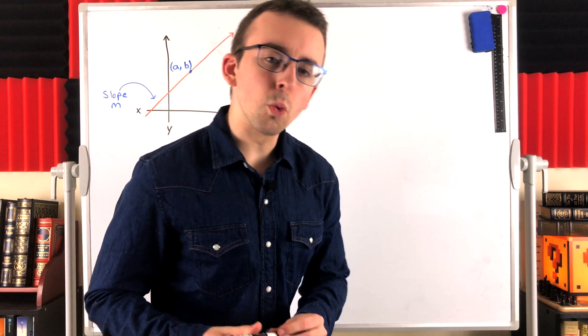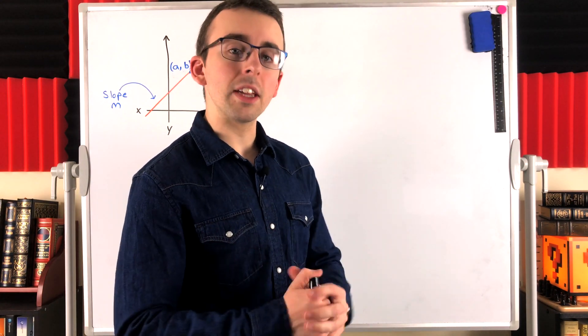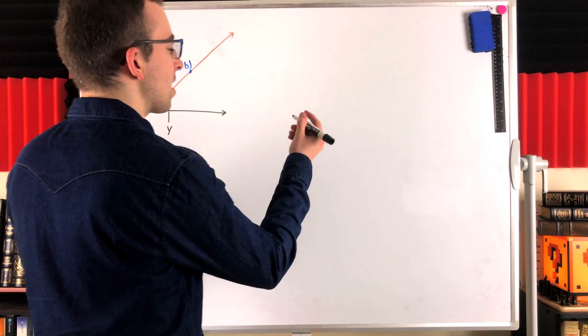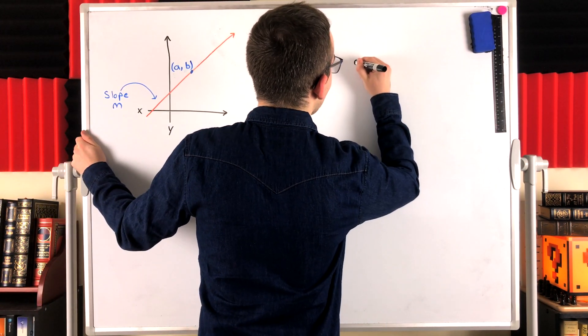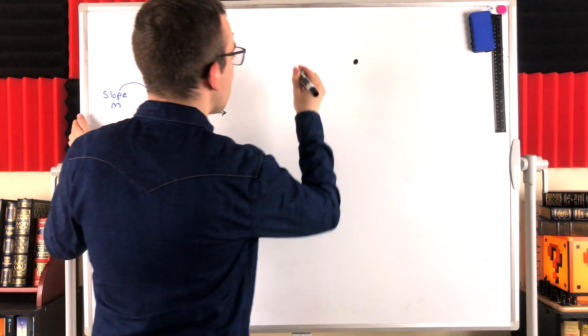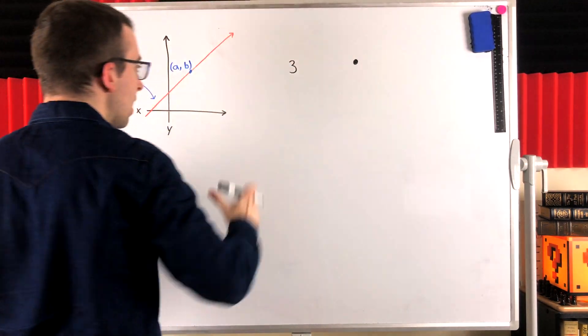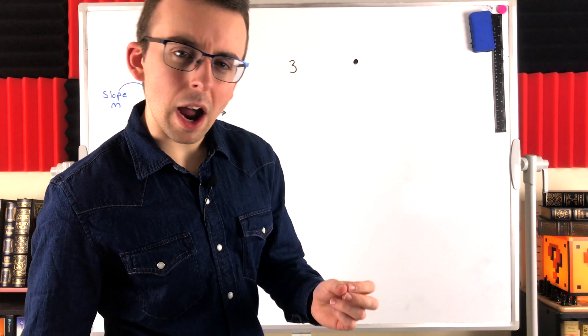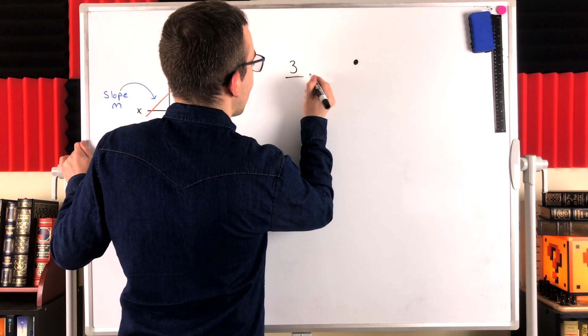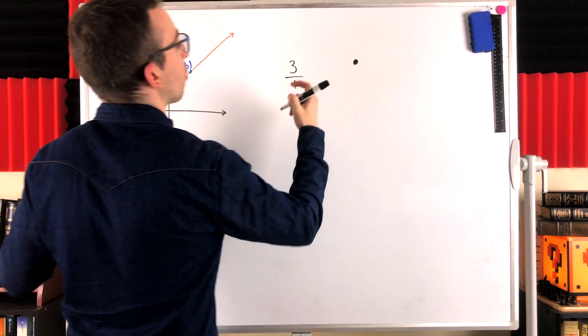Now, it shouldn't seem too wild to think that we can find the equation of a line from a single point and the slope of the line. If you just think about it, maybe we're given a point on the line, and perhaps we're given that the slope of the line is 3. Recall that slope is rise over run, so it's often helpful to write the slope as a fraction. We might write 3 as 3 over 1.